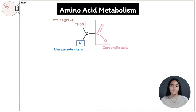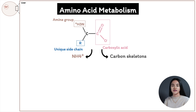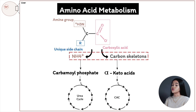In this video, we're going to cover amino acid metabolism, looking at how amino acids are oxidized and their different fates. Here's the structure of an amino acid, which contains an amino group, carboxylic acid, and a unique side chain. The overview of amino acid catabolism shows that amino acid degradation includes removing the amino group and separating it from the carbon skeletons. In this lecture, we are going to cover how the amino group is removed and the pathways of these carbon skeletons.